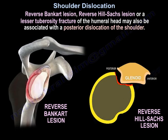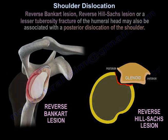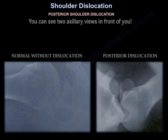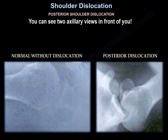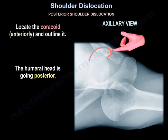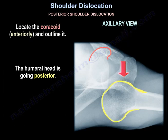A reverse Bankart lesion, a reverse Hill-Sachs lesion, or a lesser tuberosity fracture of the humeral head may also be associated with posterior dislocation of the shoulder. The axillary radiograph is the best view to diagnose posterior dislocation. On the axillary view, the coracoid is anterior and the humeral head is displaced posteriorly, distinguishing it from a normal axillary radiograph.